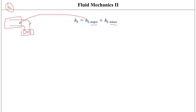An important distinction: major and minor here do not represent that one is more important than the other. Major loss indicates losses within straight pipes, minor losses indicate losses within pipe components. In many applications, especially where a piping system has a lot of components and not much straight pipe length, the minor head losses can be relatively much higher than the major head losses.